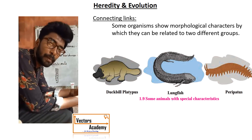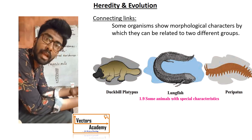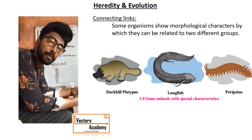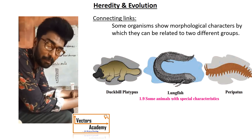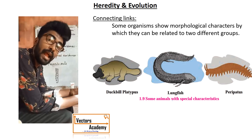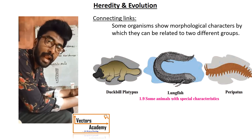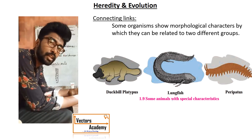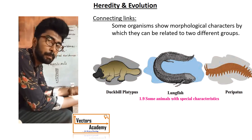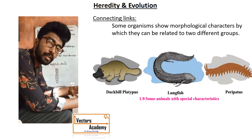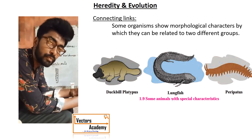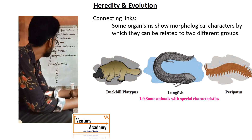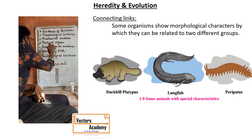Second example: the duck-billed platypus is a connecting link between reptiles and mammals. The duck-billed platypus lays eggs like a reptile, but it has mammary glands and hairs on the body like mammals. That is why it is placed between reptilia and mammalia. Duck-billed platypus is a connecting link between reptiles and mammalia.